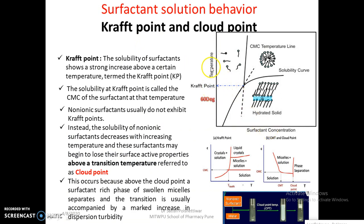If you just plot the graph of Krafft point — temperature versus surfactant concentration — you could see the solubility curve of surfactant. When you go on adding surfactant into any solution, you will get a solubility curve. At a particular point, you will get CMC — that is critical micelle concentration. This is the point at which the solubility of surfactant shows a strong increase above a certain temperature — otherwise called the Krafft point. The solubility at the Krafft point is called CMC for that surfactant at that temperature. Non-ionic surfactants usually do not exhibit a Krafft point. Instead, the solubility of non-ionic surfactant decreases with increasing temperature and the surfactant may begin to lose its surface-active properties above the transition temperature — referred to as the cloud point.